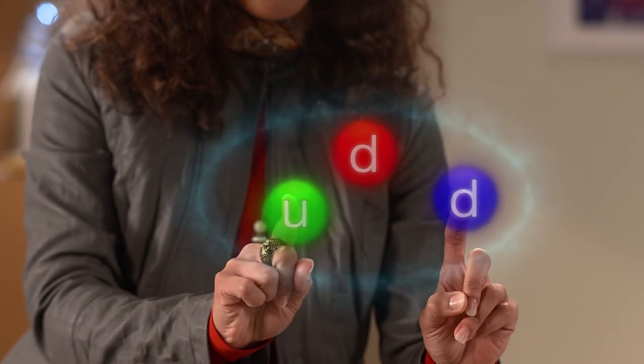Même si les quarks semblaient résoudre l'énigme du zoo des particules, les physiciens en avaient une nouvelle. Comment ces quarks font-ils pour rester reliés ensemble comme ils le font? Pour trouver une solution, il fallait trouver une nouvelle force fondamentale de la nature appelée force forte.